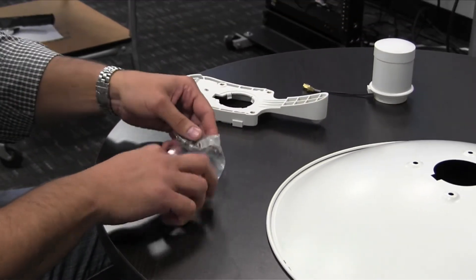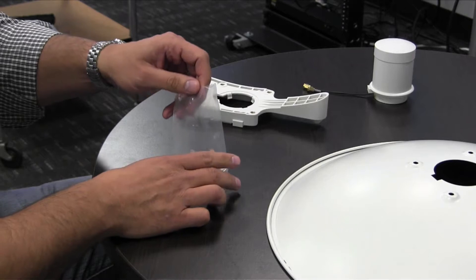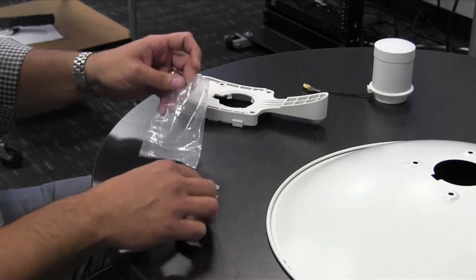Open up the small screw bag and separate out the items. We will need the four screws, washers, and lock washers for the first step.